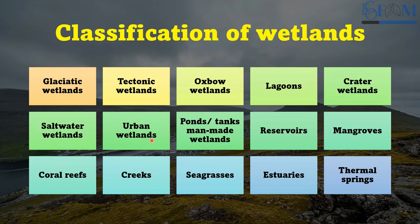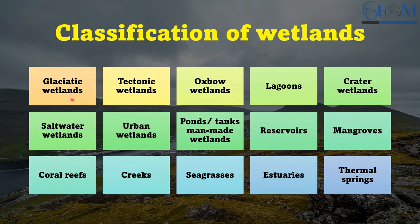Pond, tank, or man-made wetlands are mainly found in Hyderabad — Hussain Sagar, Himayat Sagar, and Osman Sagar — and Harike in Pong Dam in Himachal Pradesh. Reservoirs include Hirakud Dam and Bhakra Nangal Dam. Mangroves, found in estuaries, include Bhitarkanika in Odisha. Coral reefs are found in Lakshadweep. Creeks include Thane in Maharashtra. Seagrasses and estuaries themselves, as well as thermal springs, complete the classification of wetlands based on origin, vegetation, nutrient status, and thermal characteristics.